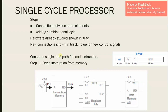We are deriving the single cycle data path for a load instruction. The load instruction belongs to the category called I-type instruction in MIPS. These instructions have a total of 32 bits. The division is: a 16-bit immediate value (which can be positive or negative), RT which is the 5-bit destination, RS which is the 5-bit source register, and OP which is the 6-bit operation code denoting the type of operation.